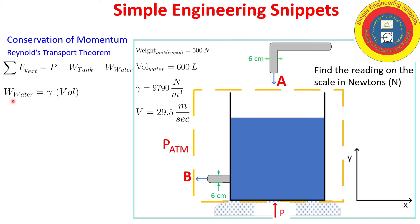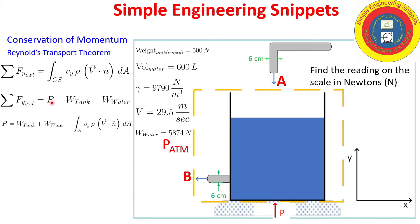So let's go ahead and calculate the weight of the water. We already calculated the specific weight or weight density and we know the volume. So it's a pretty straightforward calculation. And we get 5,874 newtons. We have our unknown supporting force, we have the weight of the tank, we have the weight of the water.